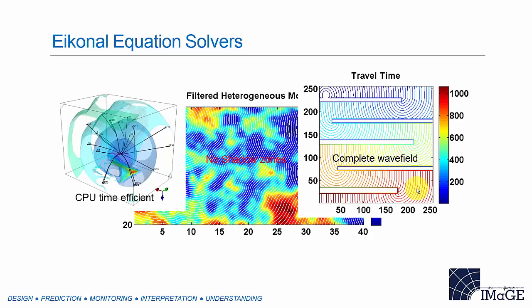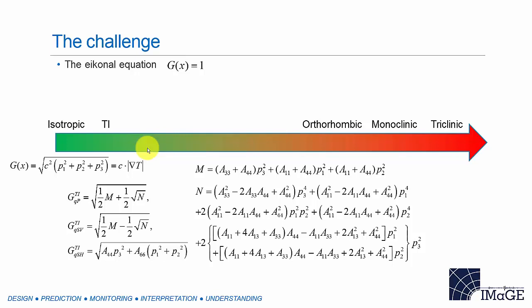For the isotropic case, the fast sweeping method is very time-efficient — it takes about five seconds to calculate the travel time for 10,000 grid points. Once you have the full travel time field, you can trace rays from any receiver by following the gradient of the travel time, so you can still obtain ray path parameters if needed. The original fast sweep method takes advantage of the eikonal equation expression for isotropic case — C is the velocity (P-wave or shear wave velocity), and P is the slowness, which is the gradient of the travel time field. The original fast sweep method works very well for isotropic and can also be applied to transversely isotropic media.